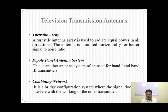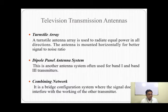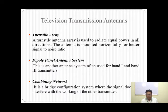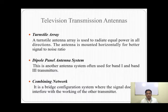Now let us see the various types of television transmission and receiving antennas. For television transmission antennas, there are two basic types: the turnstile array and the dipole panel antenna system. The turnstile antenna array is used to radiate equal power in all directions and this antenna is mounted horizontally for a better signal-to-noise ratio. The dipole panel antenna system is used for Band I and Band III transmitters. I have also discussed the combining network, which is a bridge configuration where the signal does not interfere with the working of the other transmitter.